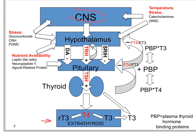The hypothalamus produces, through the portal system, TRH — thyrotropin-releasing hormone — and then it stimulates the thyrotrope cells in the pituitary to produce thyrotropin or thyroid-stimulating hormone, TSH. That has effects on the thyroid gland that are both secretory — making T4 — and also to increase the gland's hypertrophy. If TSH is elevated it can hypertrophy, or more likely when TSH is reduced, the thyroid gland will atrophy.